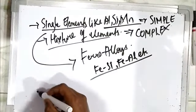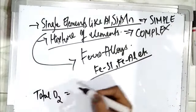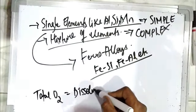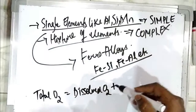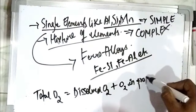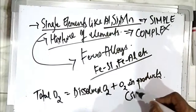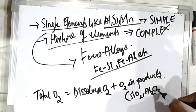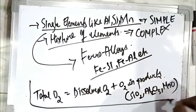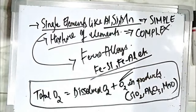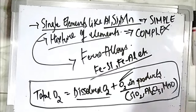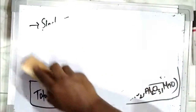The total oxygen content present in steel is the dissolved oxygen plus the oxygen present in the deoxidation products — that means whatever SiO2, Al2O3, etc. is formed. So there is some amount of oxygen that will be present in these deoxidation products also. The deoxidation process involves not only the removal of dissolved oxygen but these deoxidation products must also be removed.